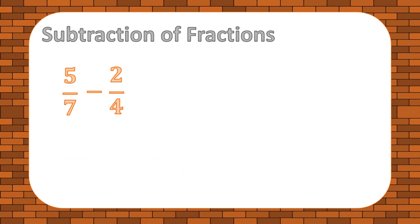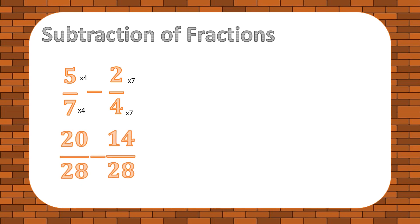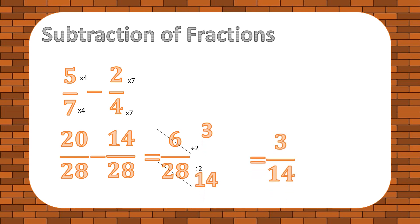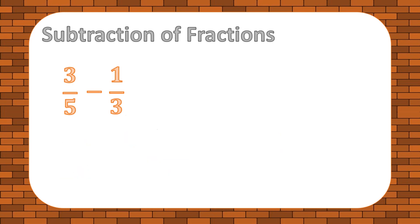Now we come to the subtraction of fractions. The steps are almost exactly the same as addition. First, make the two denominators the same — you can either find a common multiple or simply multiply the denominators by each other. Once the fractions have similar denominators, subtract the numerators and retain the denominator value. Lastly, convert to the lowest term if needed.